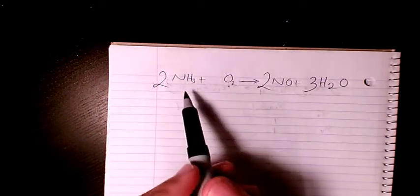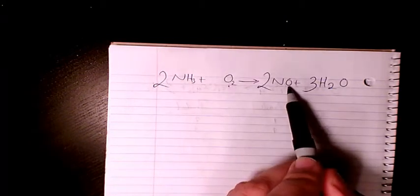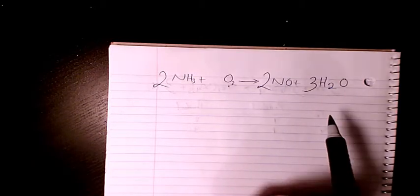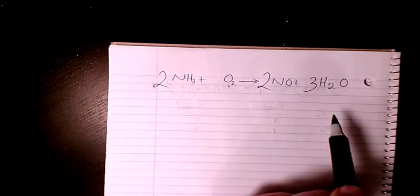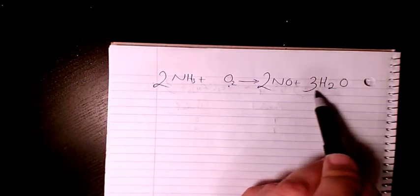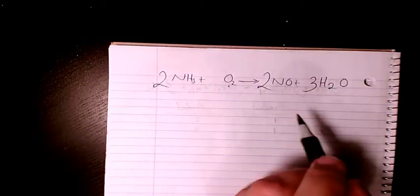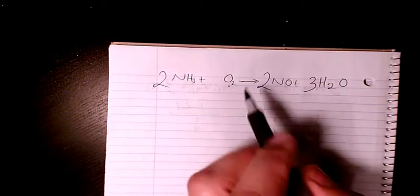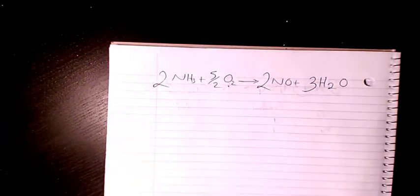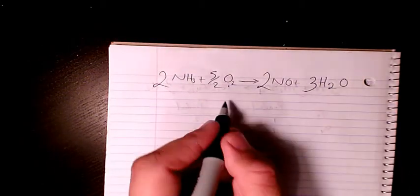What about oxygen? Oxygen we have two on this side and on this side we have two plus three, so that's not balanced. We have three here, we have two here. This is five and here we have two, so we can write it as five over two or two and a half, or if you want to get rid of this fraction,